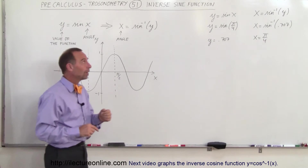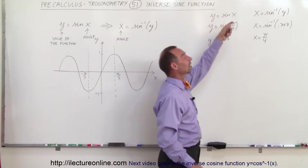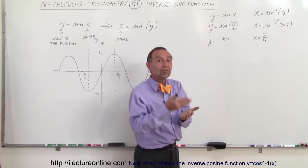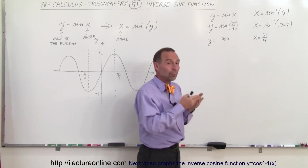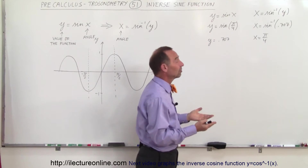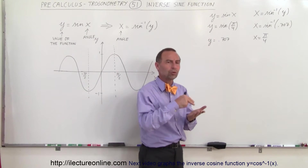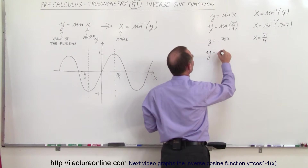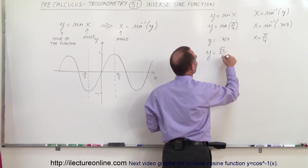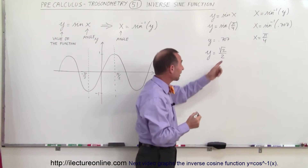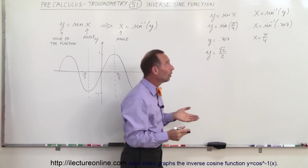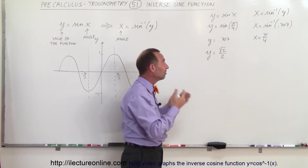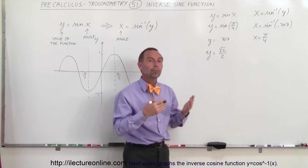So what do we mean by that? We're familiar with y equals the sine of x. If I give you the function y equals sine of x, and I say what is y equal to when the angle x is equal to pi over 4, which is 45 degrees — the answer is the square root of 2 over 2, which is 0.707. So the sine of 45 degrees, or the sine of pi over 4, is equal to the square root of 2 over 2, or 0.707.